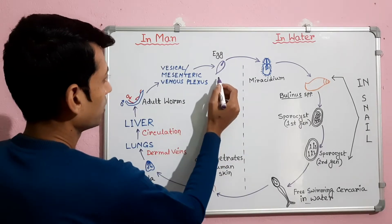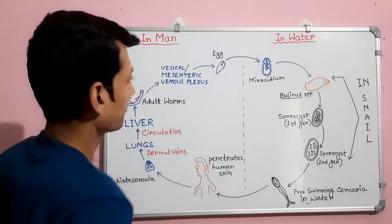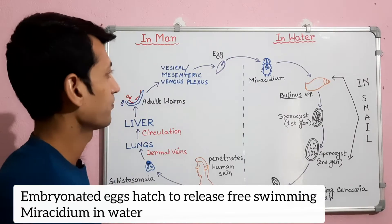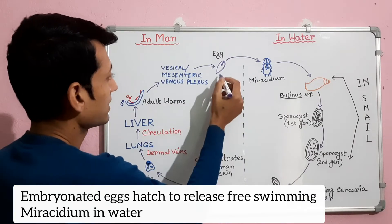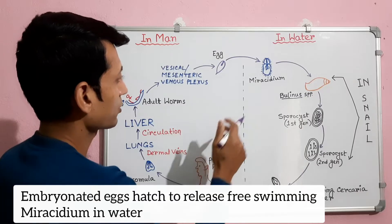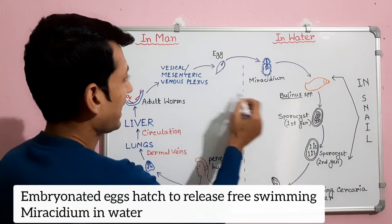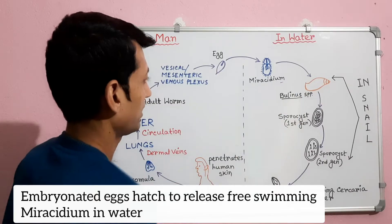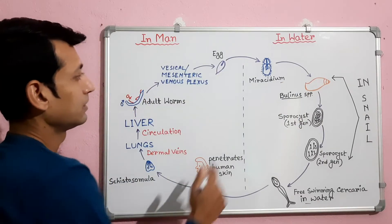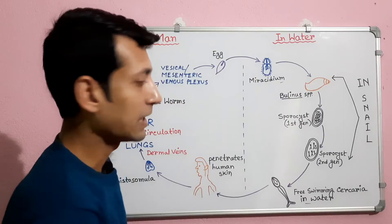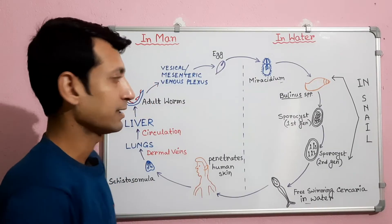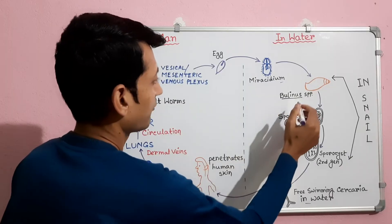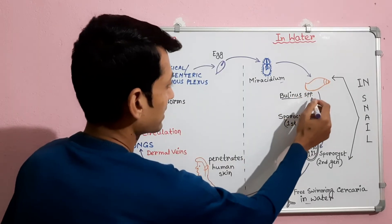Fully embryonated eggs are passed in the urine of infected persons. When these eggs manage to reach water bodies, they hatch to release free-swimming miracidium larvae. The miracidium lives in water for 8 to 12 hours and infects freshwater snail Bulinus species.